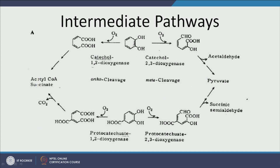Catechol can degrade via two routes. Via catechol 1,2-dioxygenase, oxygen is added at the 1,2 position, oxidizing the OH groups and breaking the bond to yield a diacid, which breaks into acetyl-CoA and succinate to enter the citric acid cycle. Alternatively, catechol 2,3-dioxygenase adds oxygen at the 2,3 position, breaking the ring differently, yielding acetaldehyde and pyruvate, which also undergo further degradation easily.